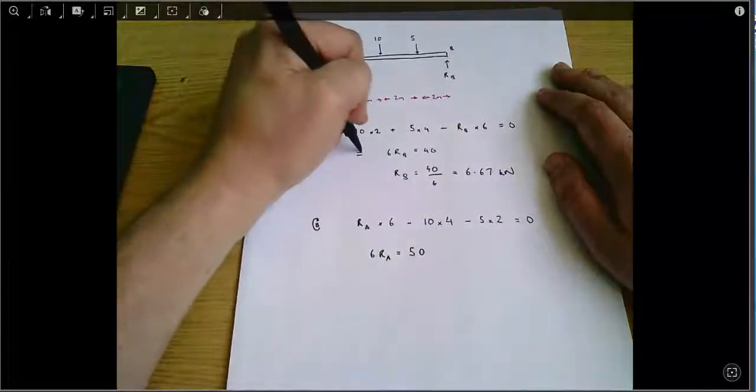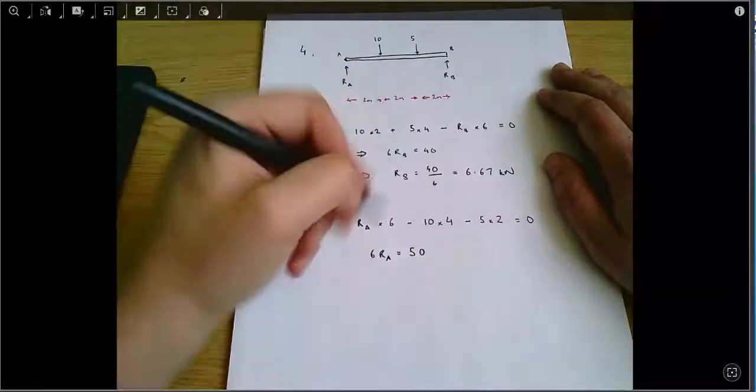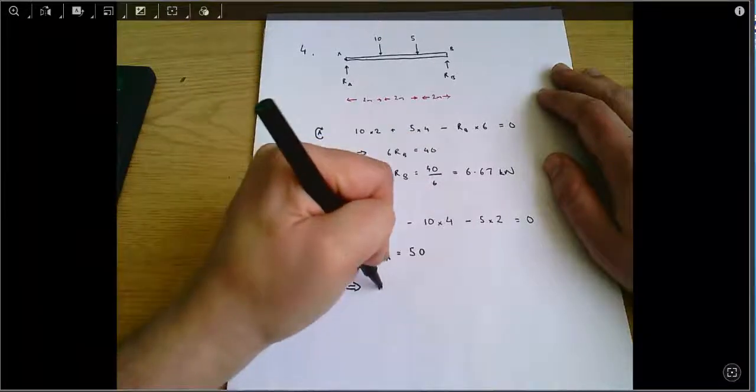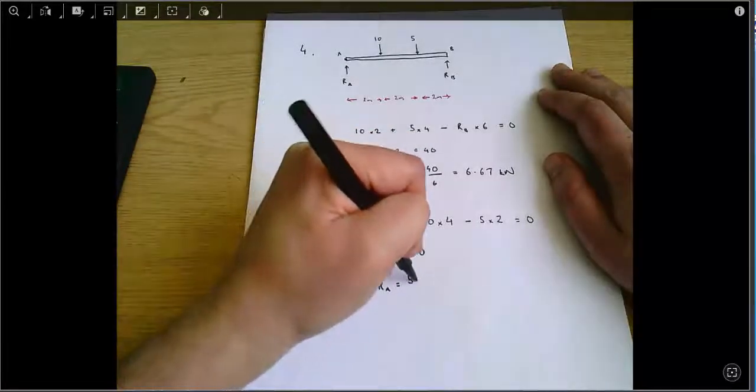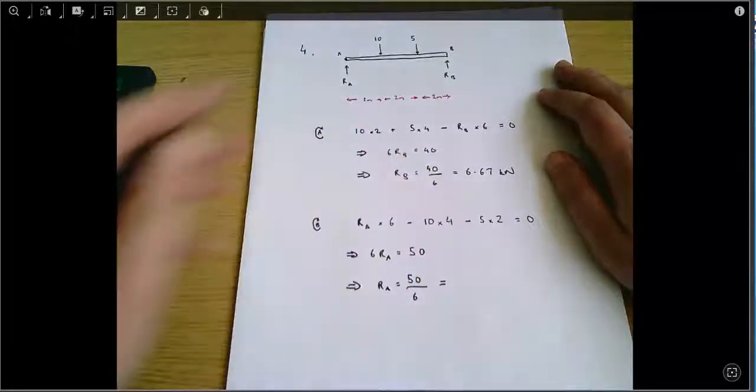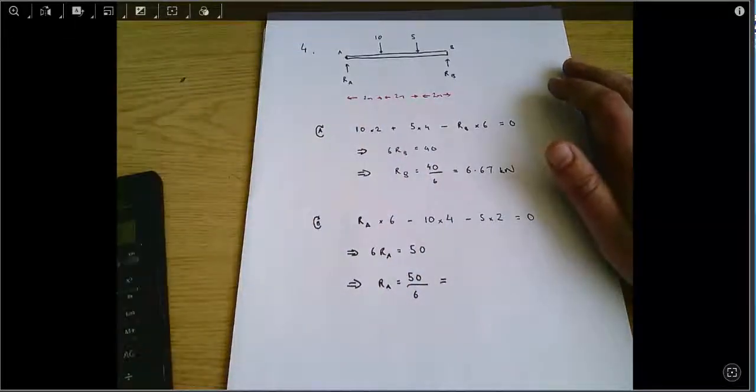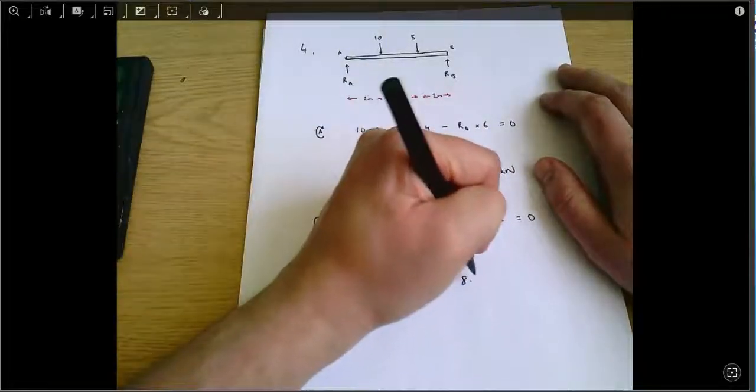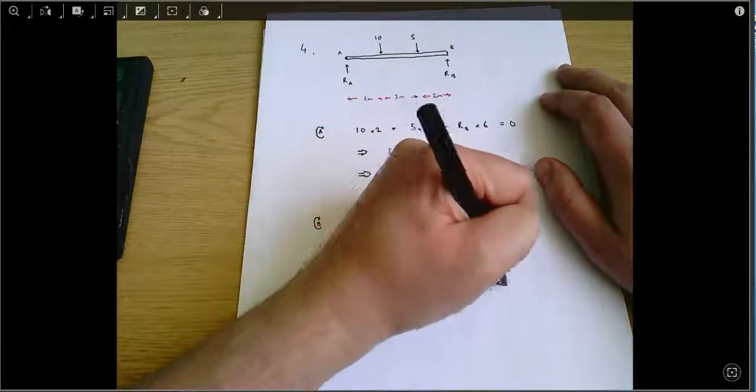And therefore, I'm just going to mark on my signs showing that each line comes from the previous line. RA equals 50 divided by 6, which equals 8.33 kilonewtons.